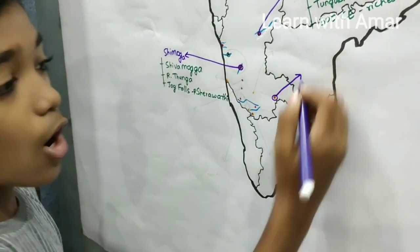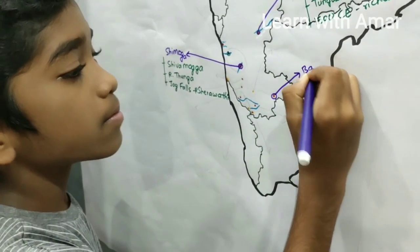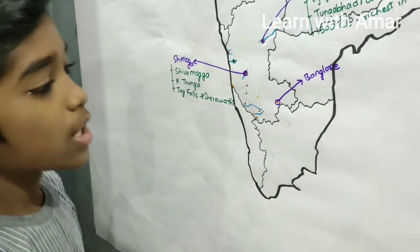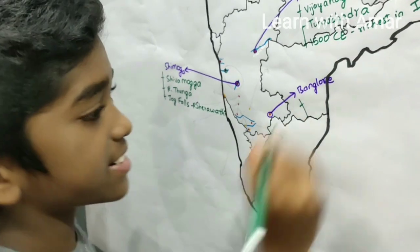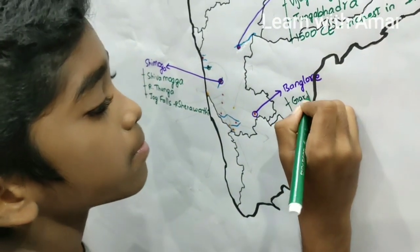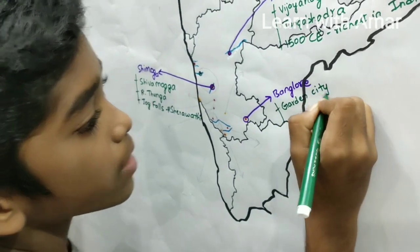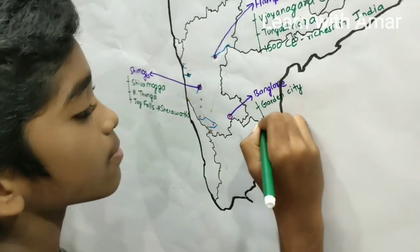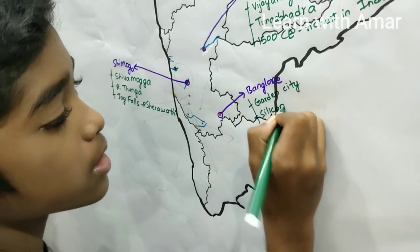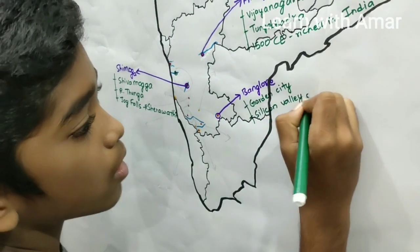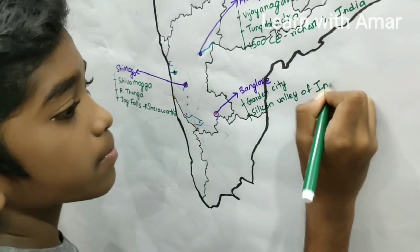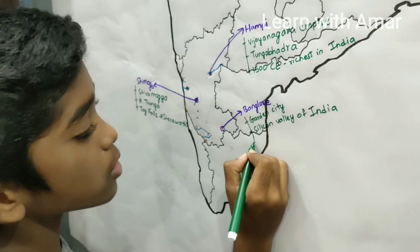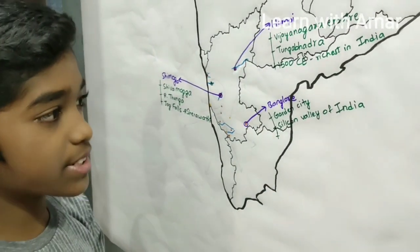Moving south, we find the capital city of Karnataka, that is Bangalore. Bangalore is known as the city of gardens — the Garden City. And it is also known as the Silicon Valley of India.